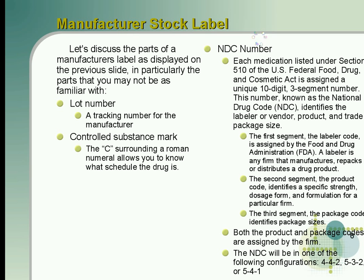Each medication listed under Section 510 of the US Federal Food, Drug, and Cosmetic Act is assigned a unique ten-digit, three-segment number. This number, known as the National Drug Code, identifies the labeler or vendor, product, and trade package size. The first segment, the labeler code, is assigned by the FDA. A labeler is any firm that manufactures, repacks, or distributes a drug product. The second segment, the product code, identifies a specific strength, dosage form, and formulation for a particular firm. The third segment, the package code, identifies package size.